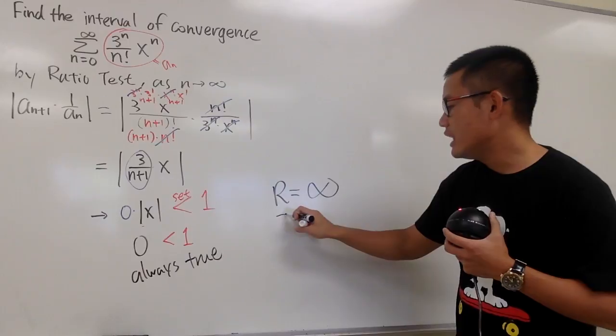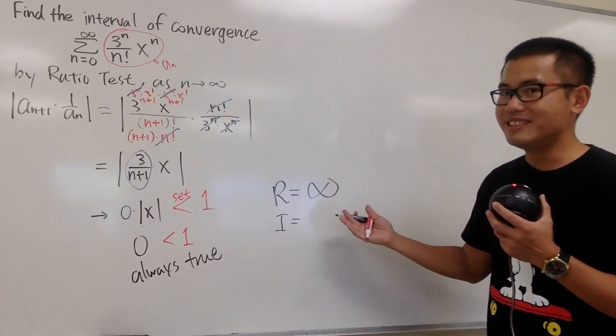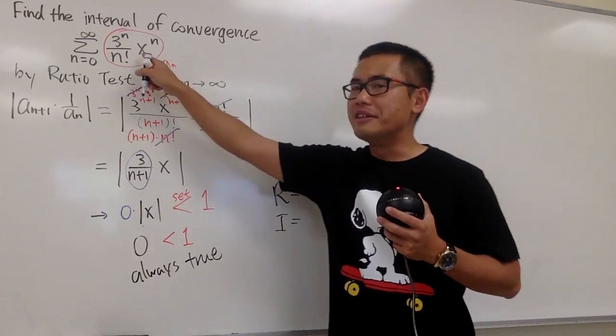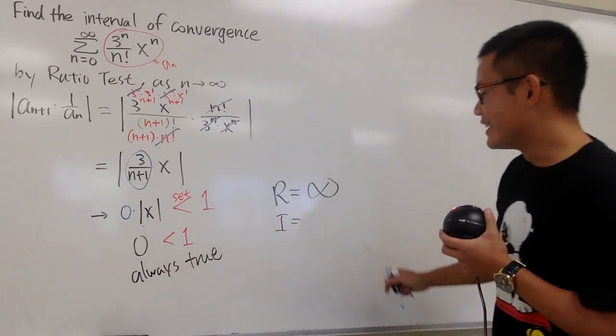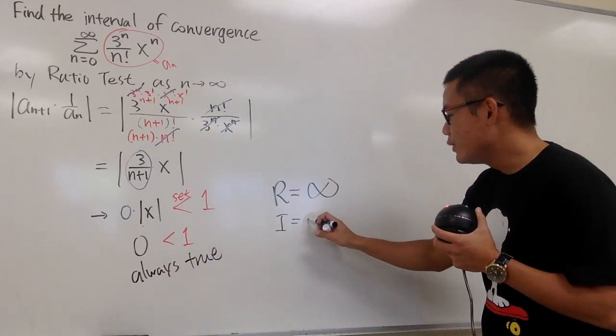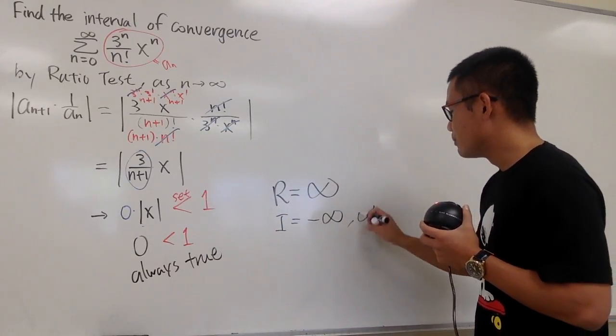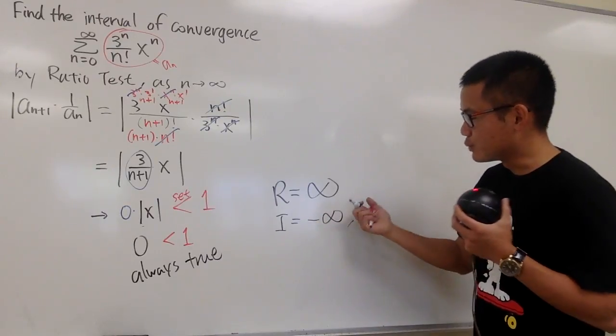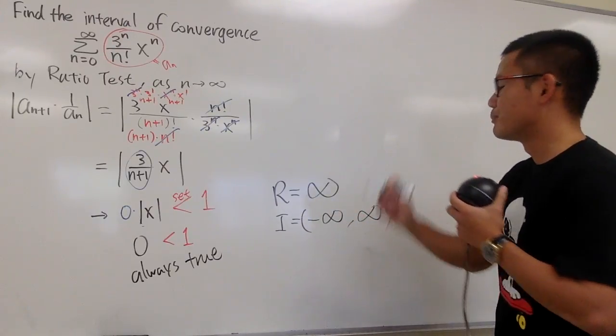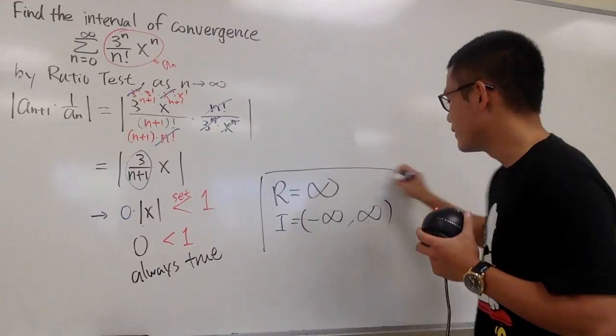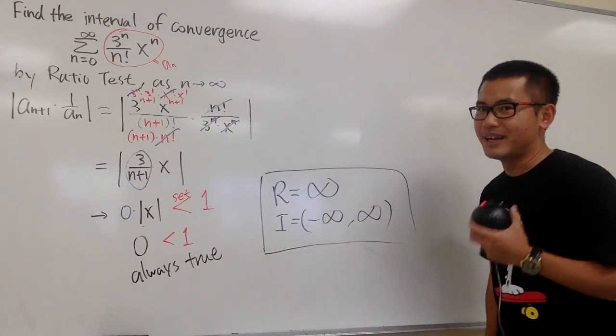And when you have this, the interval of convergence is going to be really easy. By the way, the center is at 0, but it doesn't really matter, because the interval of convergence will be going from negative infinity to positive infinity. Of course, when we are dealing with infinities, just parentheses, because we can never include infinities. So, this is it, nice, right?